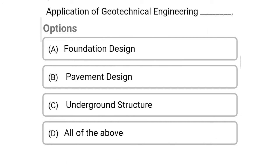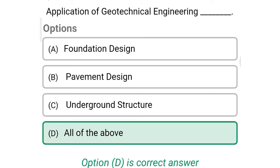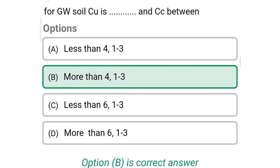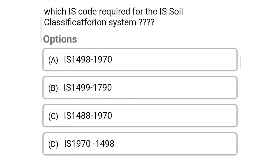So next question: applications of geotechnical engineering — Option A: foundation design. Option B: pavement design. Option C: underground structure. Option D: all of the above. The correct answer is Option D, all of the above. So next question: for GW soil, CU is ___ and CC between ___ — Option A: less than 4 and 1 to 3. Option B: more than 4 and 1 to 3. Option C: less than 6 and 1 to 3. Option D: more than 6 and 1 to 3. The correct answer is Option B: for GW soil, CU is more than 4 and CC is between 1 to 3.